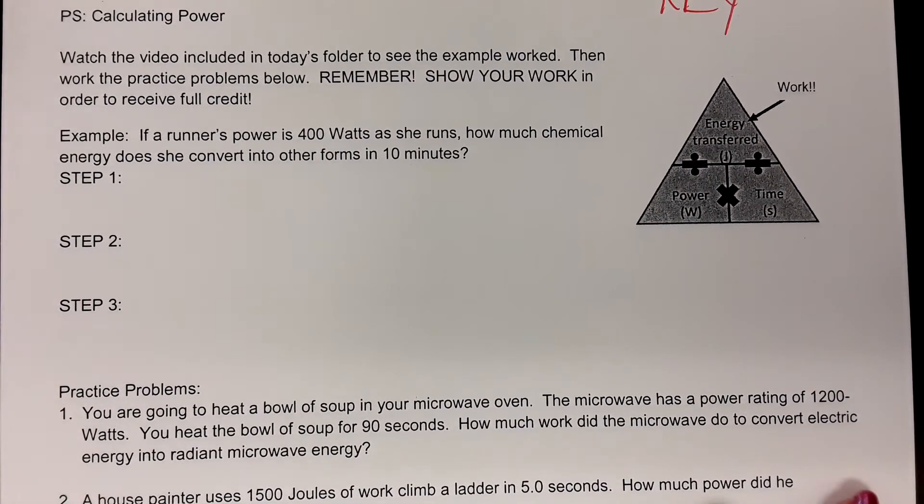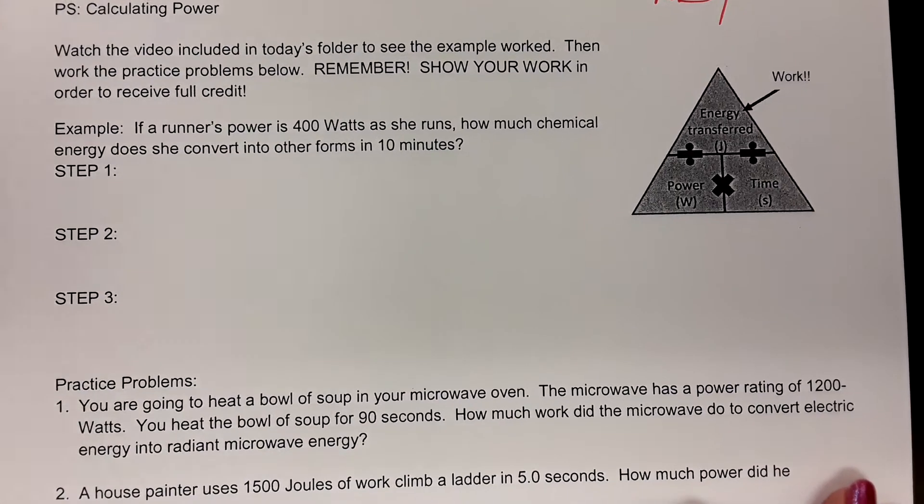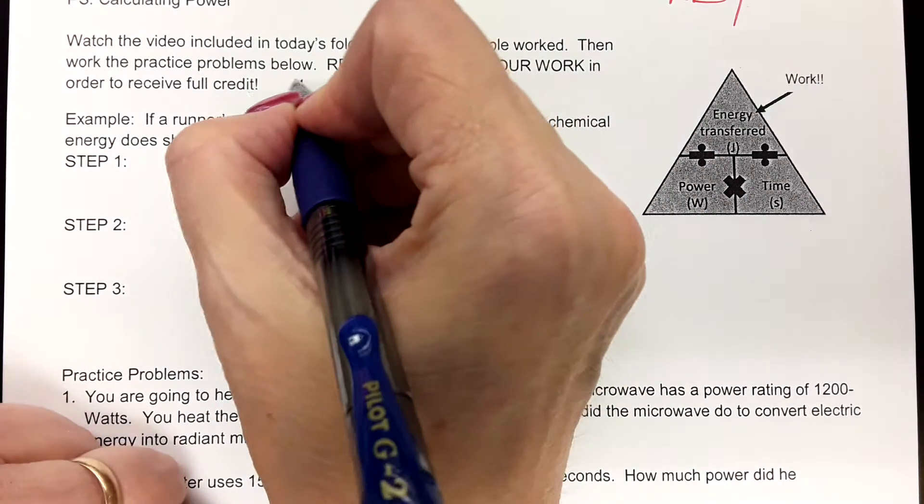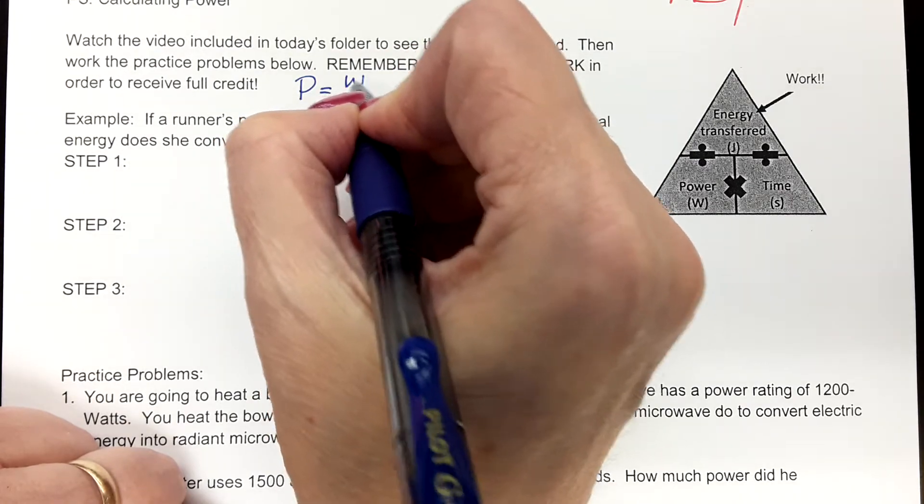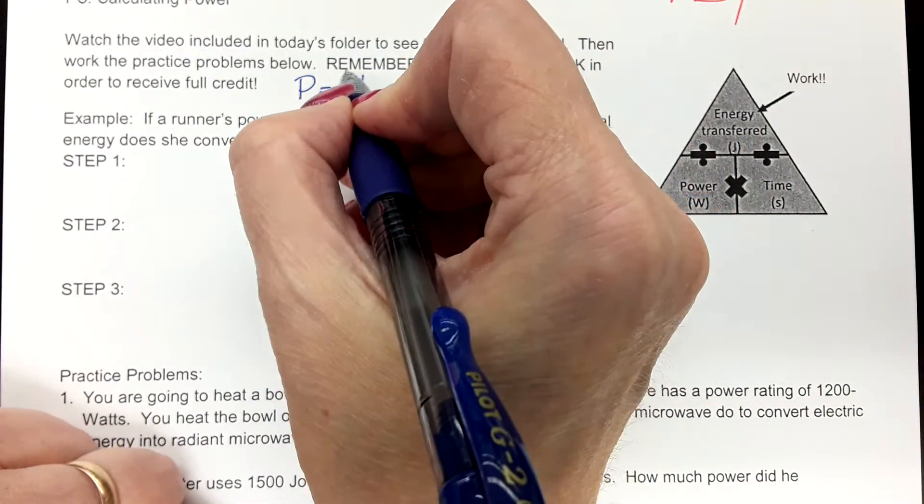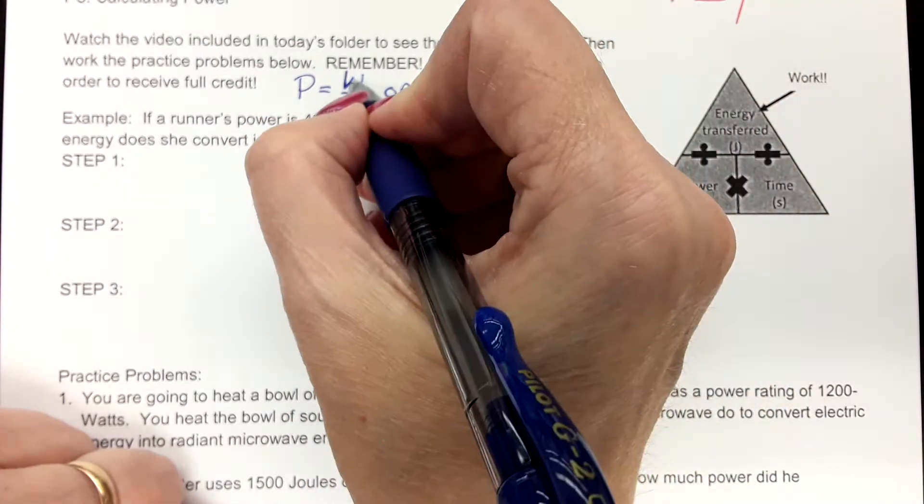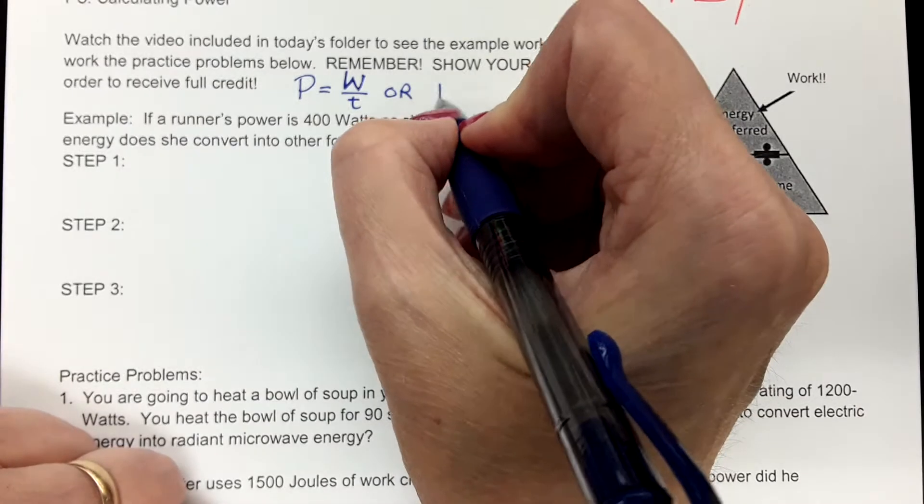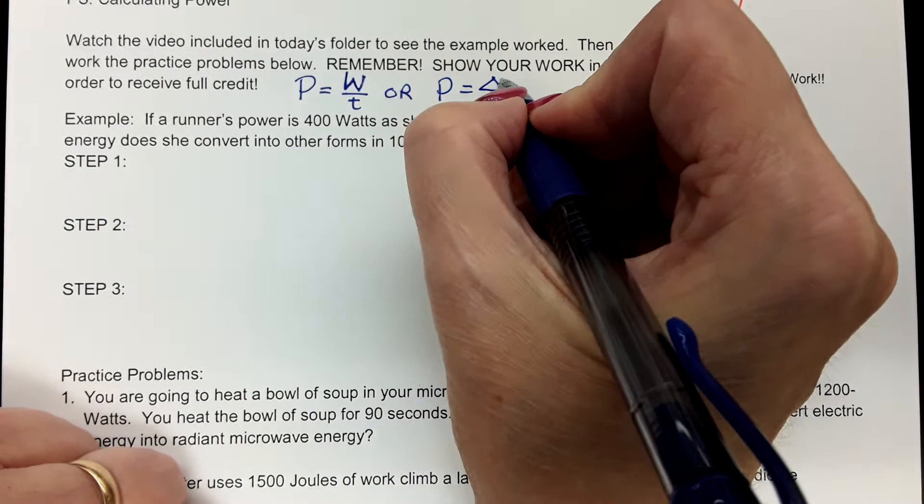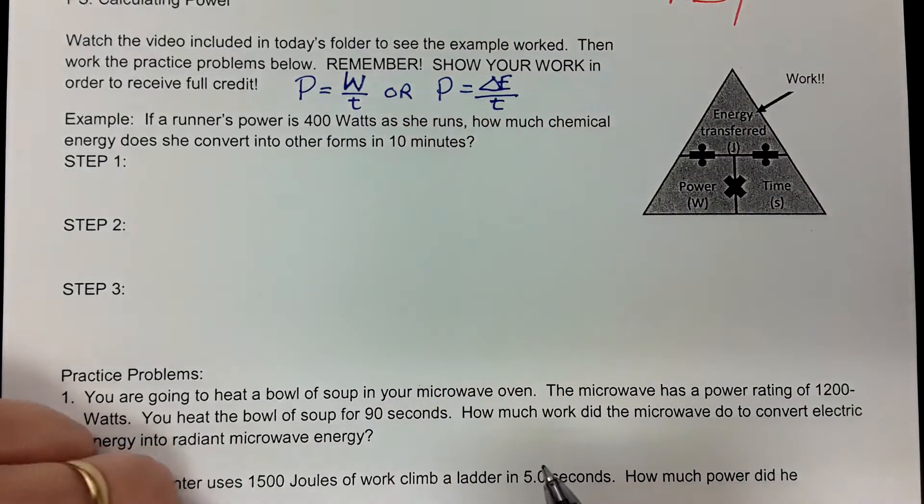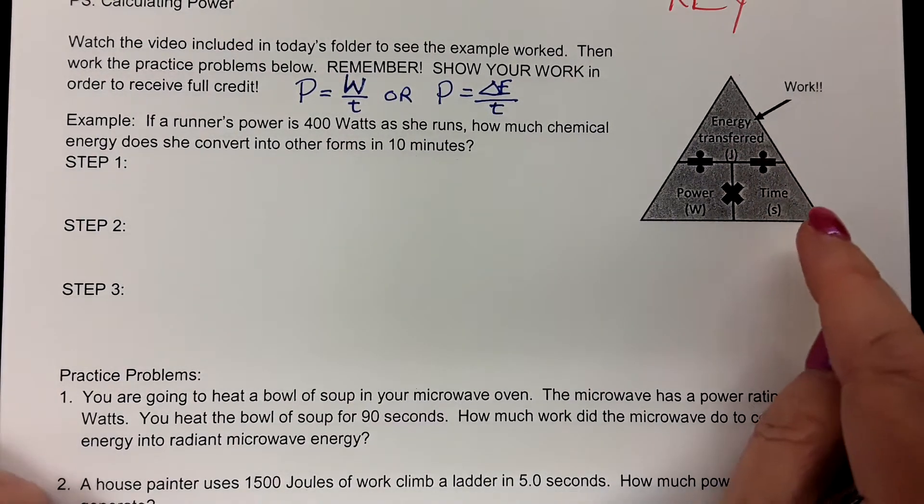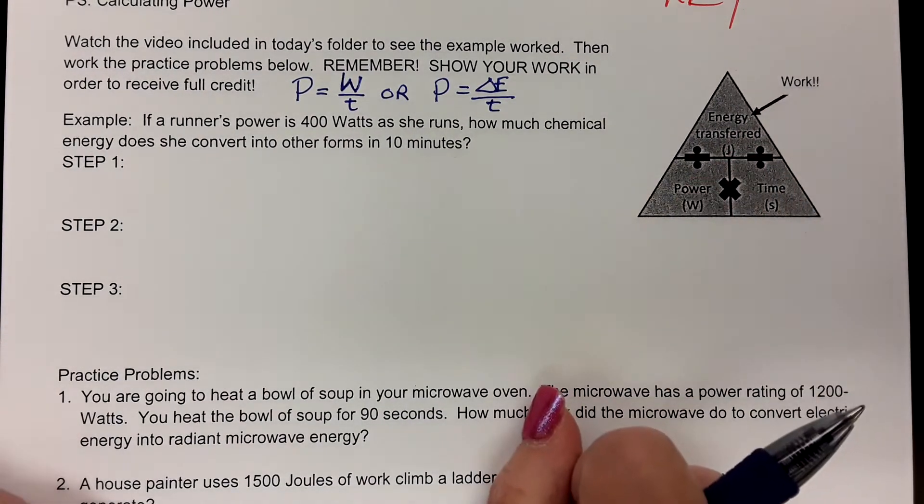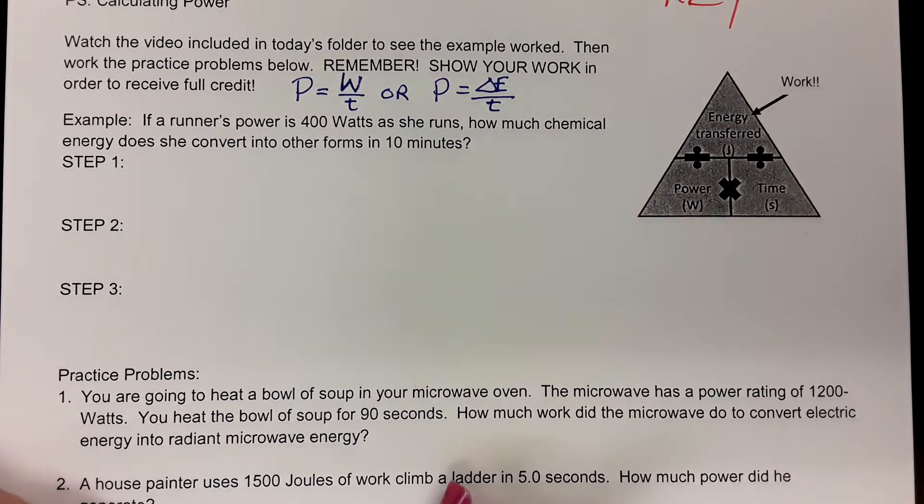Now, if you remember from our notes, power is the rate of work done or it's how fast you do your work, or remembering that work is also how we convert energy. Power is the change in energy per unit time. Either one of those, it's the same thing. Work and converted energy or transferred energy are the same thing. So that's why they're both measured in joules and we can use either one.